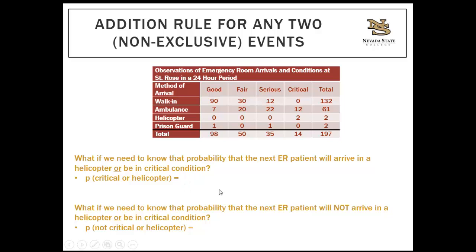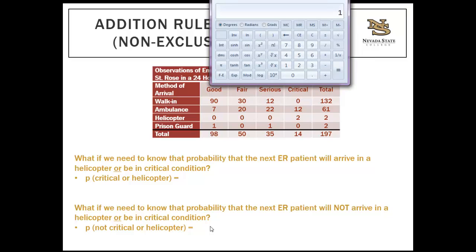The probability that the next ER patient will arrive in a helicopter or be in critical condition: look at all critical cells (12 + 2) and all helicopter cells. Since the only helicopter arrivals are in the critical row (2), avoid double counting — the total is just 12 + 2 = 14. Then 14 divided by 197 equals 0.071. For the second part — not arriving in a helicopter or being in critical condition — use the complement rule: 1 minus 0.071 equals 0.929.